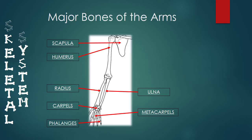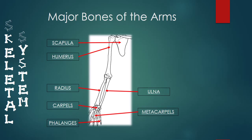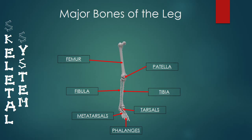The major bones of the arms include, starting from the top, the scapula, humerus, radius, ulna, carpals, metacarpals and phalanges. Lastly, the major bones of the leg include the femur, patella, fibula, tibia, tarsals, metatarsals and phalanges.